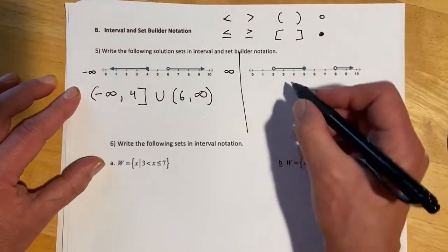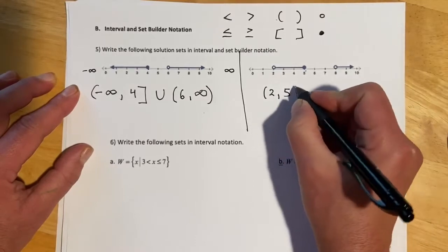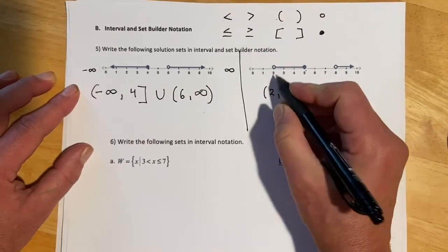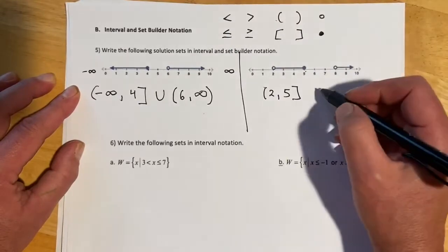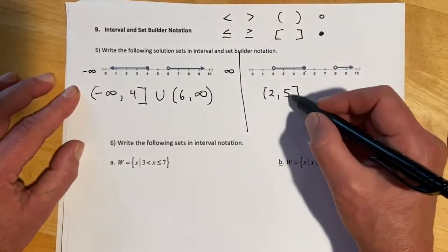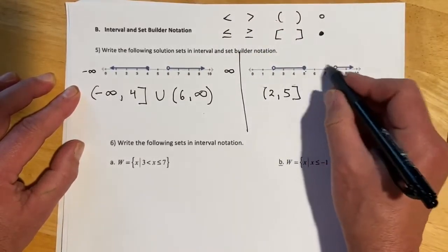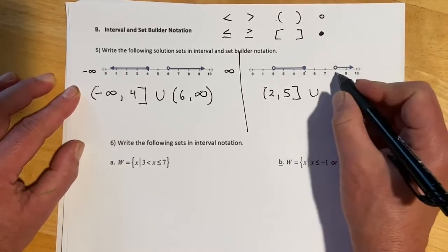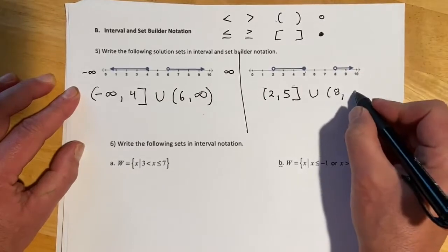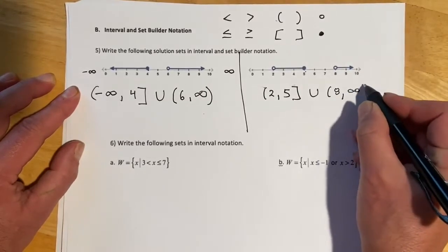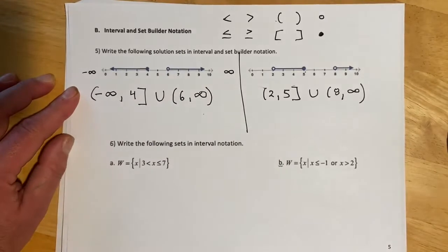This next one: same idea. It looks like it starts at 2 and goes to 5. Parenthesis on the open dot because that would have been a not-equals, then bracket on the 5 because it's a closed dot. We've got a gap, so that means union. Then we pick back up at 8, and that extends forever to infinity.